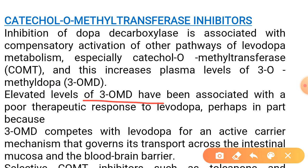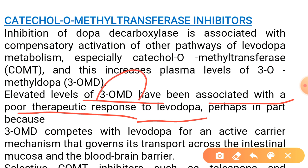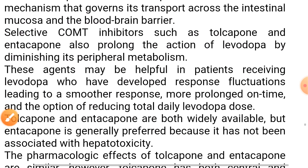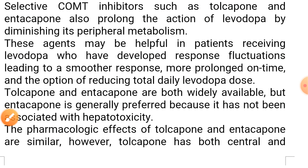Elevated levels of 3-O-methyldopa have been associated with a poor therapeutic response to levodopa, because 3-O-methyldopa competes with levodopa for the same carrier mechanism that governs transport across the intestinal mucosa and the blood-brain barrier. So wherever levodopa needs to cross these barriers, 3-O-methyldopa also competes for entry, and the effect of levodopa begins to diminish.